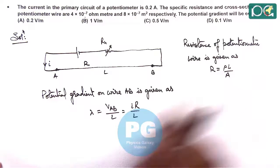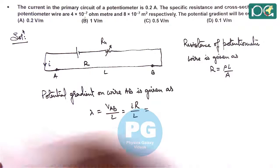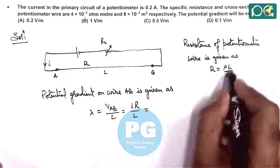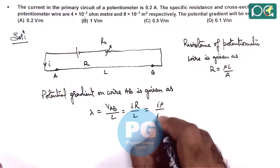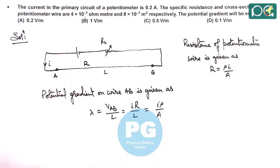So if we substitute the values here, when we substitute the value of R as rho L by A, L gets cancelled out and it is given as I rho by A. That also we have discussed in theory illustrations.